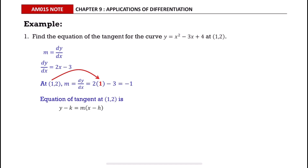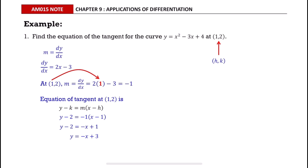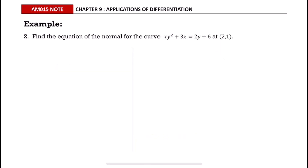Now we can find the equation of tangent using the formula. Substitute all the values into the formula, where h and k are the x and y coordinates of the point, then solve. You can also leave your answer in equivalent forms.